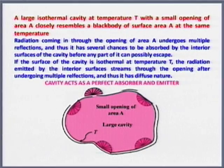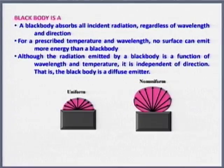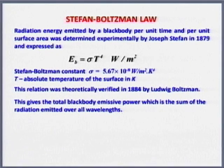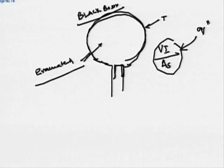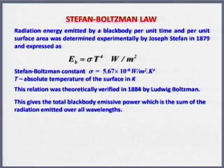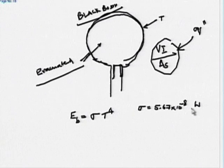With this we will move on and understand what is called the Stefan-Boltzmann law. Stefan-Boltzmann law states that radiation emitted by a black body per unit time per unit surface area is given by E_b = σT⁴, where σ is 5.67 × 10⁻⁸ W/m²K⁴.